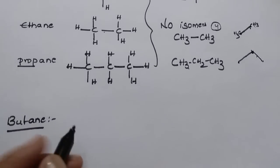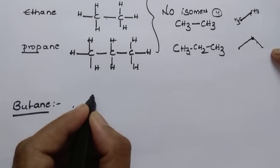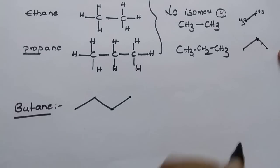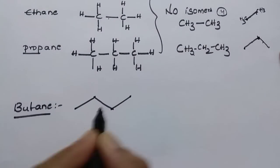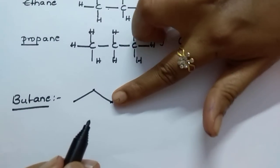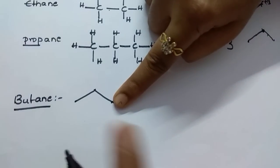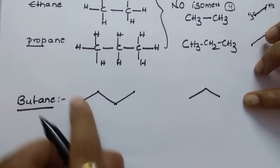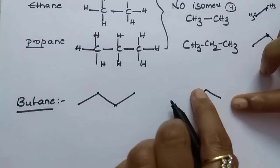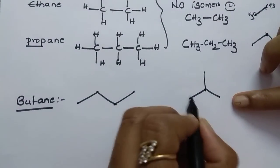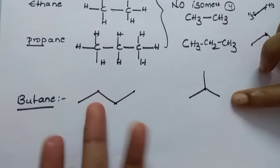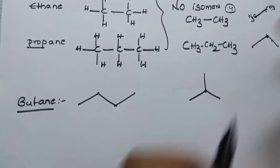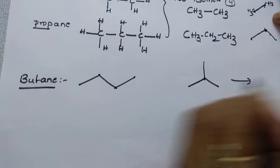Now for butane: four carbons — put four dots and join them. That is the first isomer. Next, take a parent chain of three carbons (one less than four), then place the remaining one carbon as a branch. If you put it on the first or last carbon it gives the same structure, so place the branch on a middle position. Total isomers for butane: two.